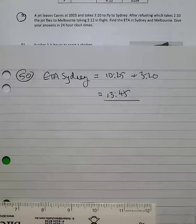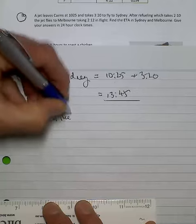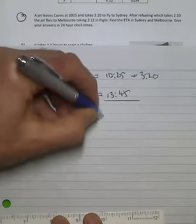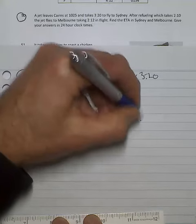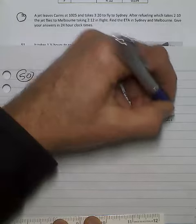Now refueling which takes 2 hours 10. We've got the ETA in Melbourne: 1345 plus the 2 hours 10 and then plus the 2:12.